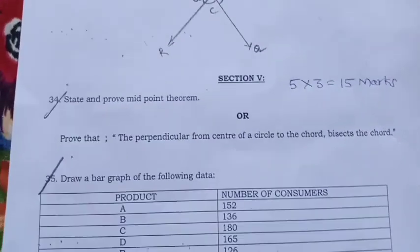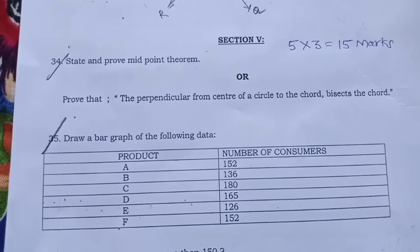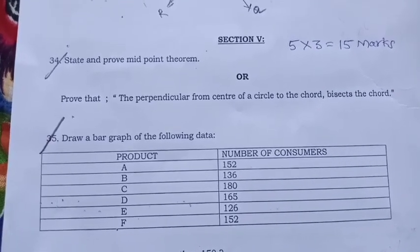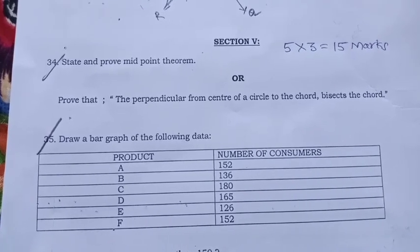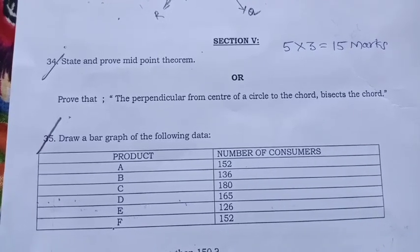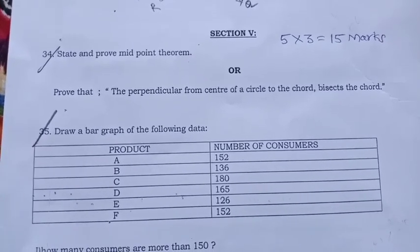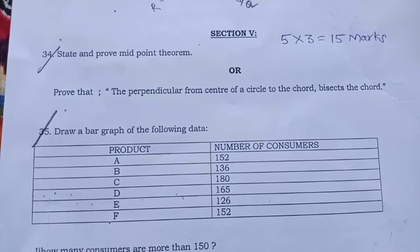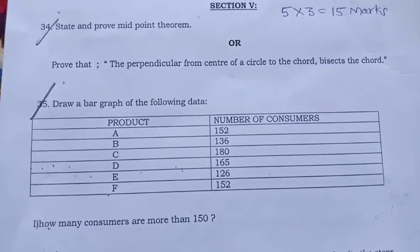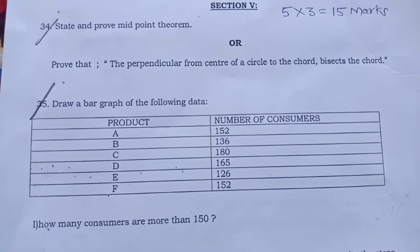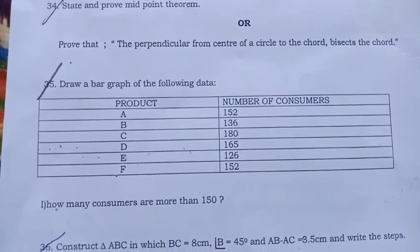Here section 5, each question carries 5 marks, 3 questions. State and prove midpoint theorem or prove that the perpendicular from center of a circle to the chord bisects the chord. They have given choice here. Draw bar graph of the following data: Product and number of consumers. A, B, C, D, E, F: 150, 136, 180, 165, 126, 150. How many consumers are more than 150?